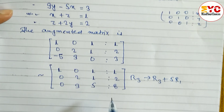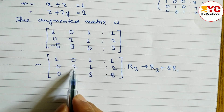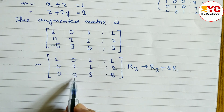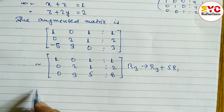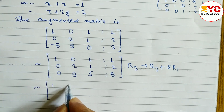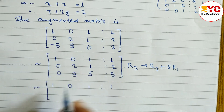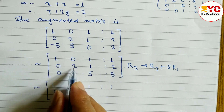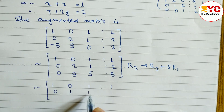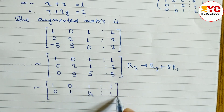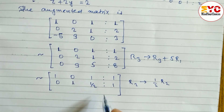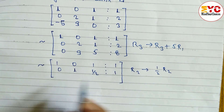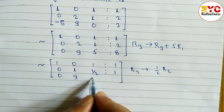Now we need to convert the leading entry of row 2 into 1. We divide row 2 by 2, applying R2 → (1/2)R2. Row 1 remains: 1, 0, 1, 1. The new row 2 becomes: 0, 1, 1/2, 1. Row 3 remains the same.